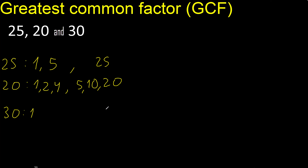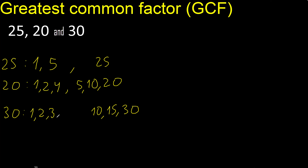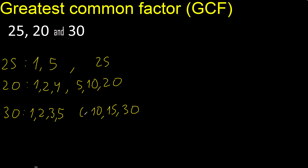Divided by 1. Next, divided by 2. Next, divided by 3. Next, cannot be divided by 4. Next, divided by 5 is 6. Next, 6. 6 is here.